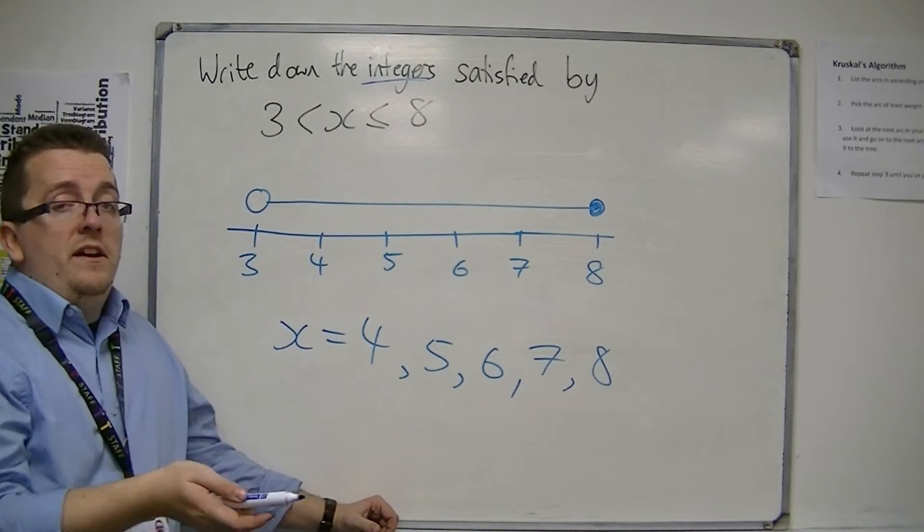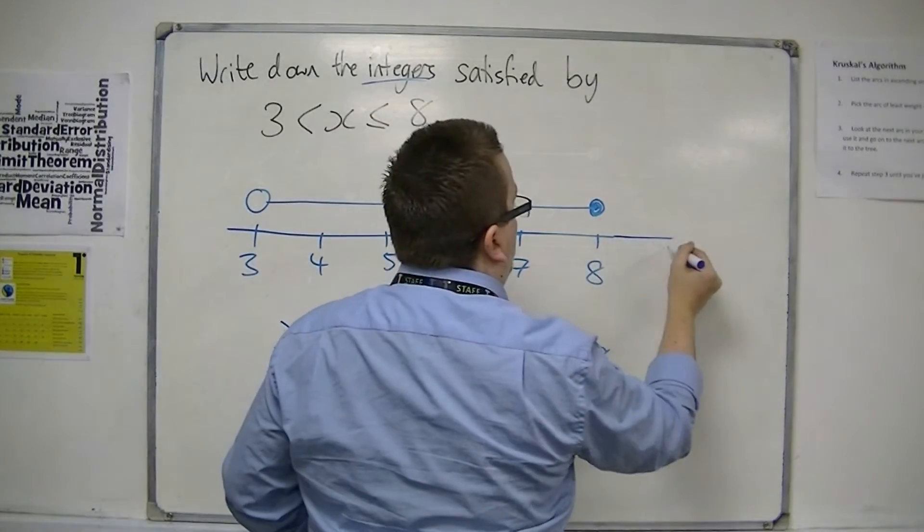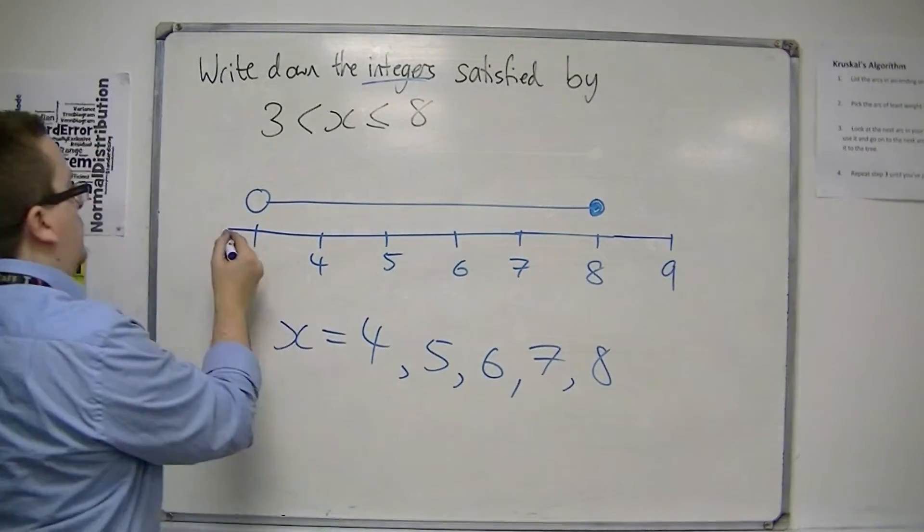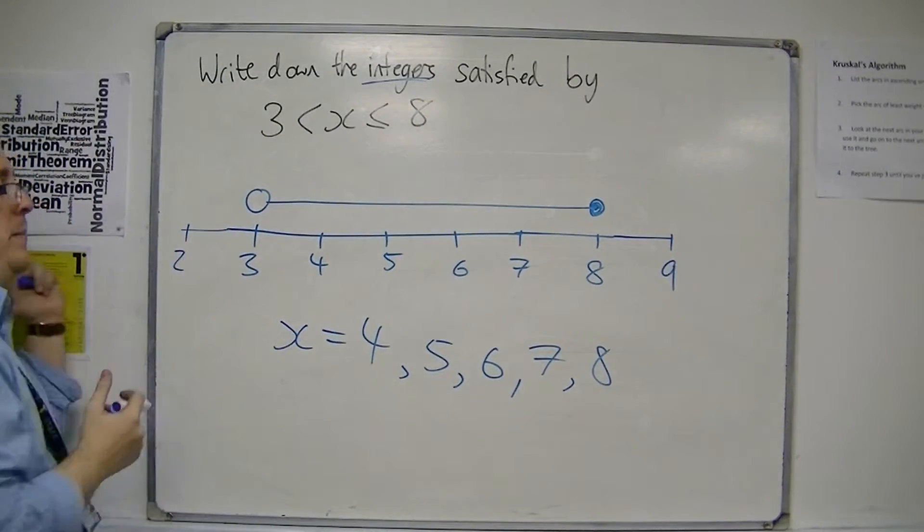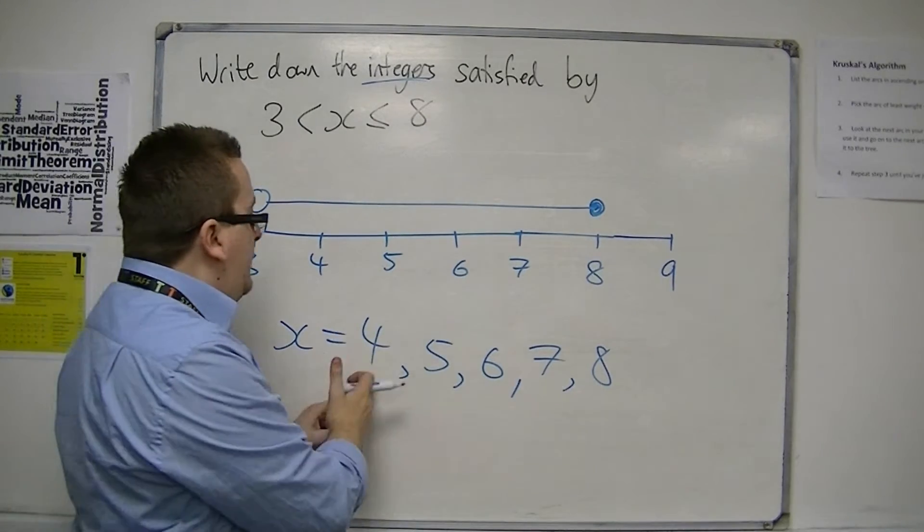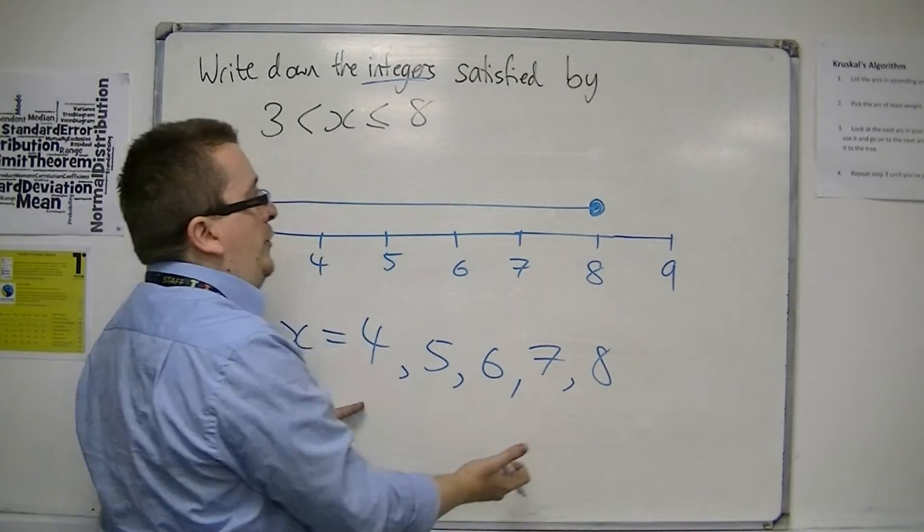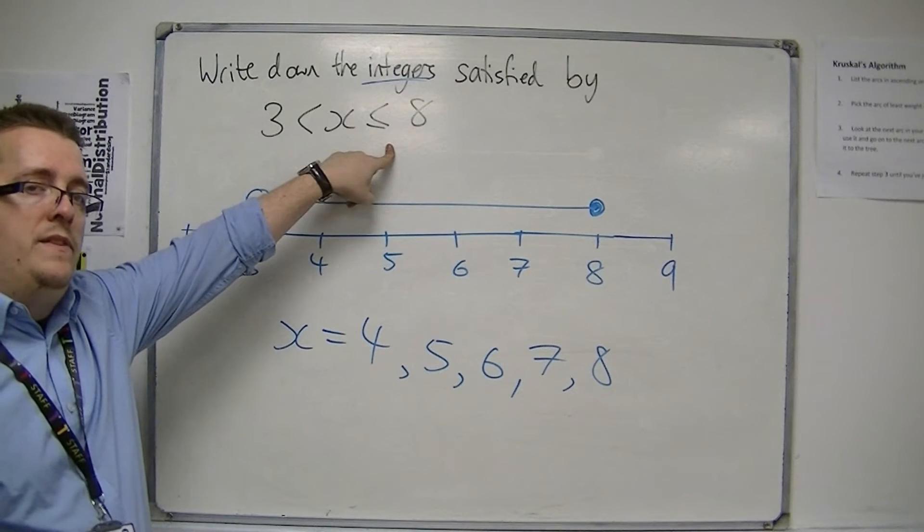But it can't take 9, because that's outside the region. Likewise, it couldn't take 2, or any number less. So these are the only integers that are satisfied by that inequality.